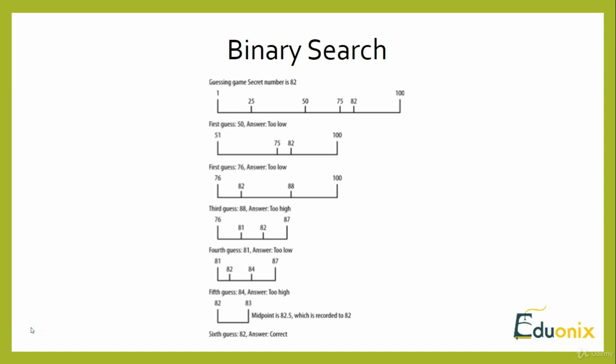To understand how binary search works, imagine you are playing a game — a number guessing game where the possible number is between 1 and 100, and you have to guess the number chosen by your friend. According to the rules, for every guess you make, your friend has three responses.